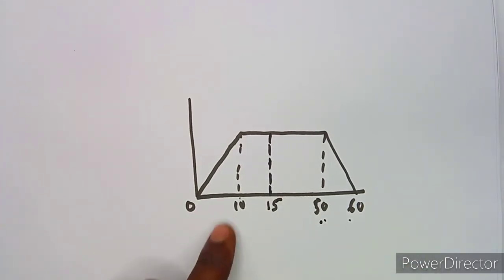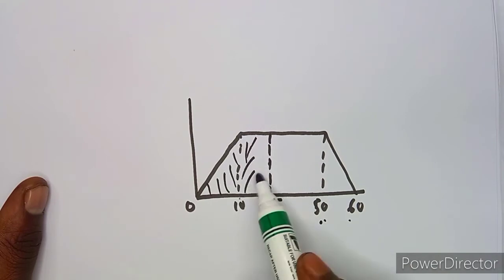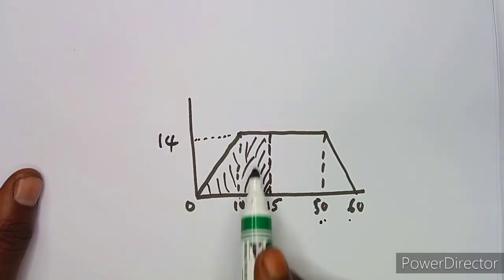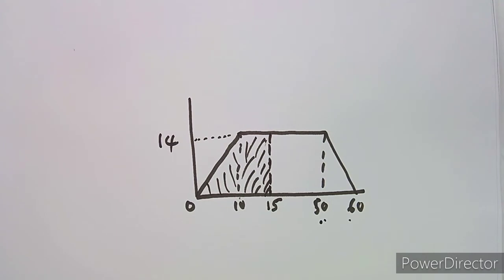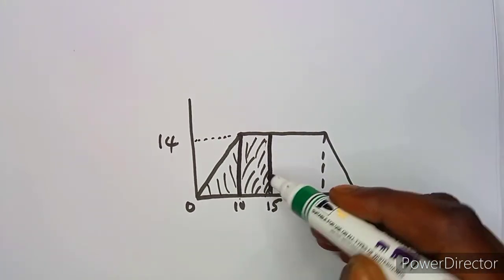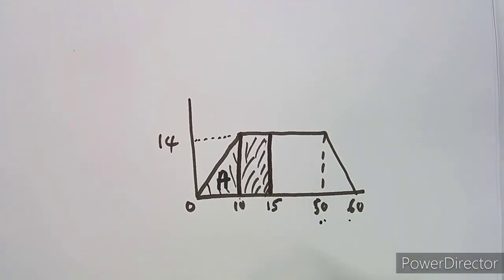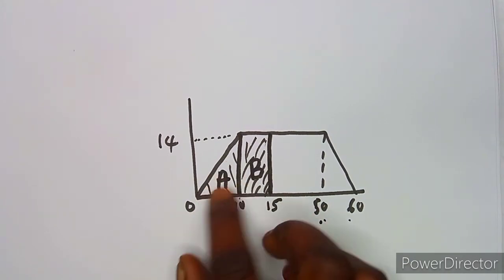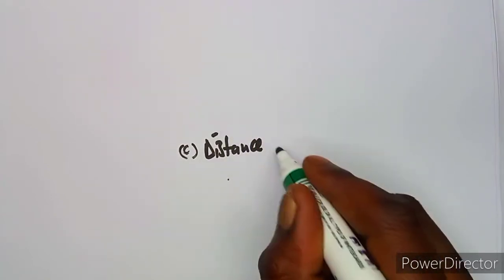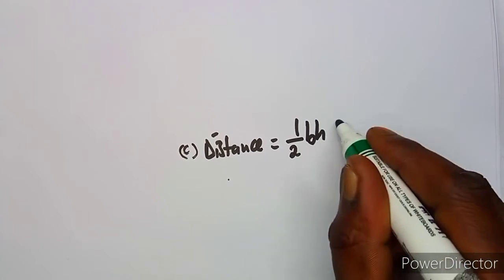There are two options: divide the shape into a triangle and a rectangle, or treat the whole shape as a trapezium. I'll use the triangle plus rectangle method. The shape from 0 to 15 seconds can be split into a triangle from 0 to 10, and a rectangle from 10 to 15.